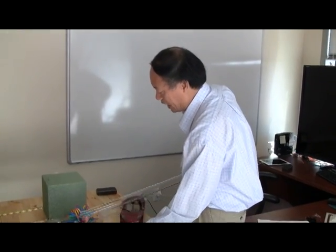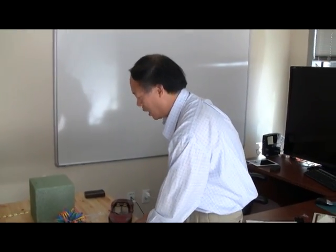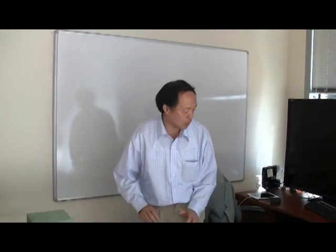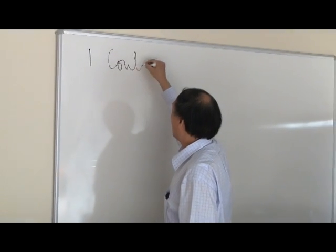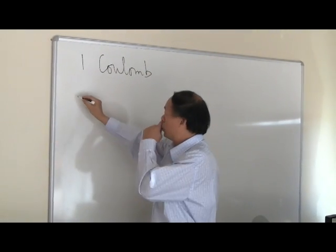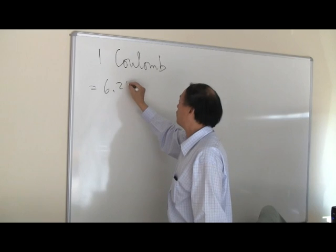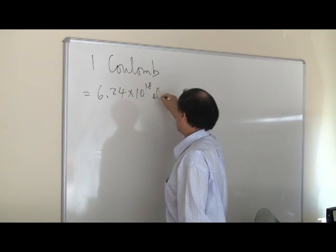Now today we're going to explain what charges are. And the basic unit for electric charge is a coulomb, C-O-U-L-O-M-B. And one coulomb contains 6.24 times 10 to the 18 electrons.